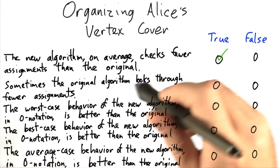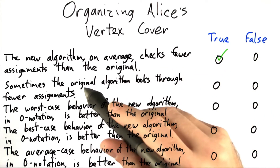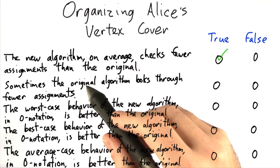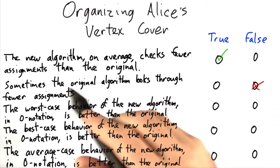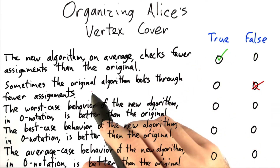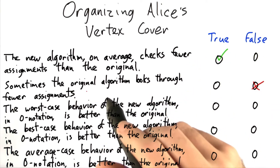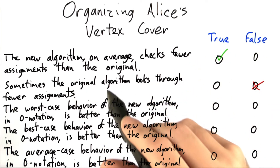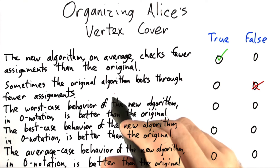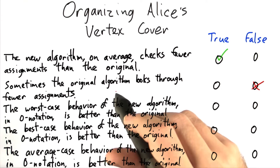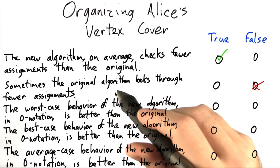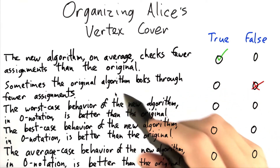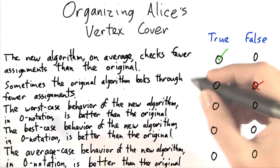Does the original algorithm sometimes look through fewer assignments? This is actually false. The same reasoning applies: the original algorithm has to look through every possible assignment, whereas the new algorithm sometimes doesn't.